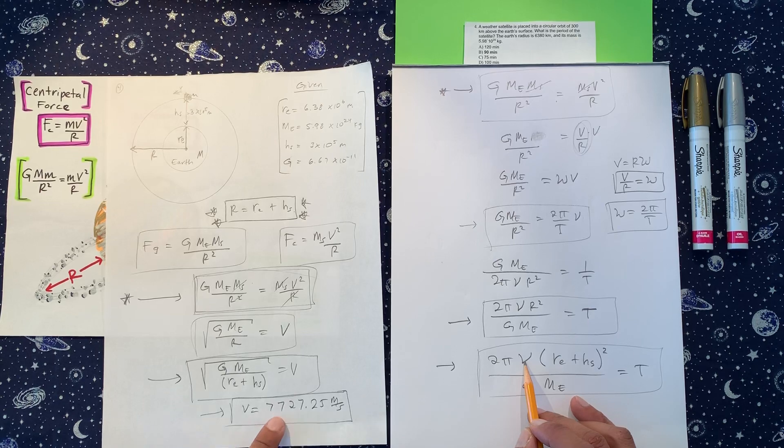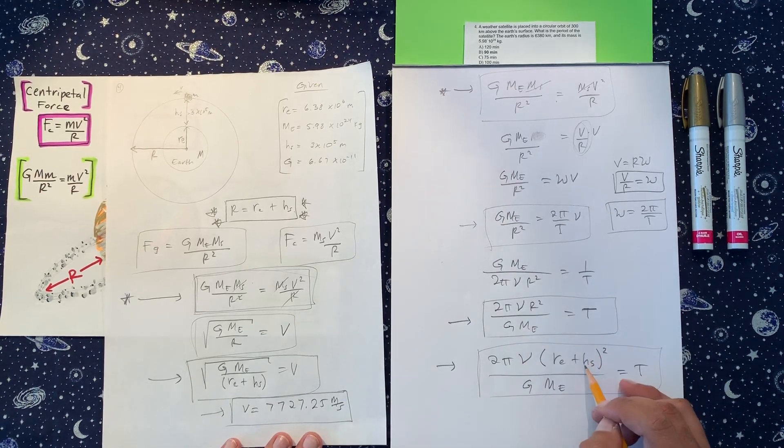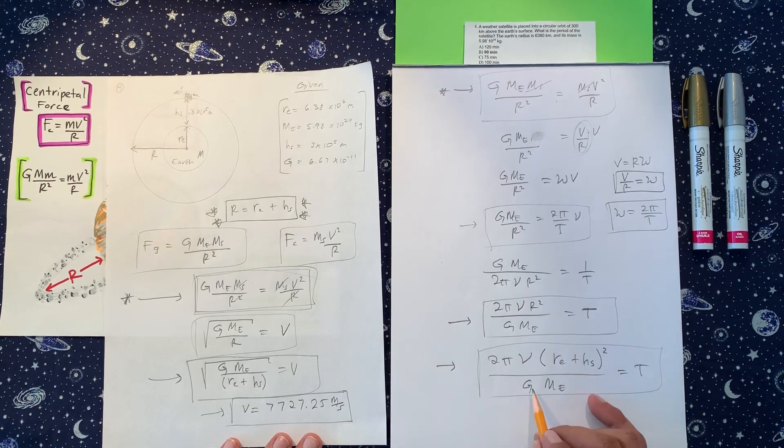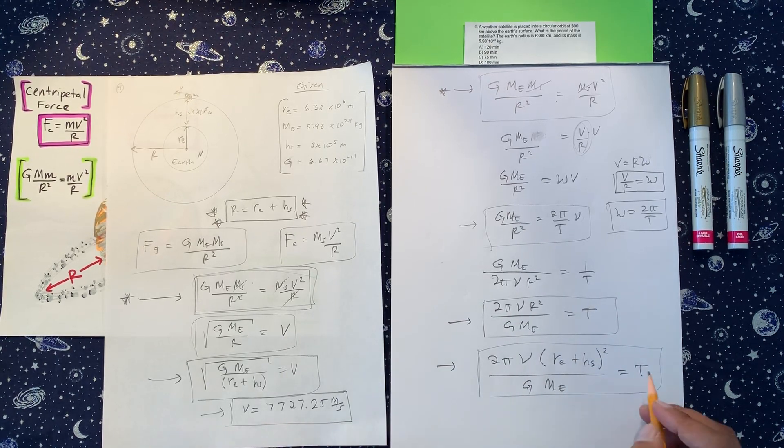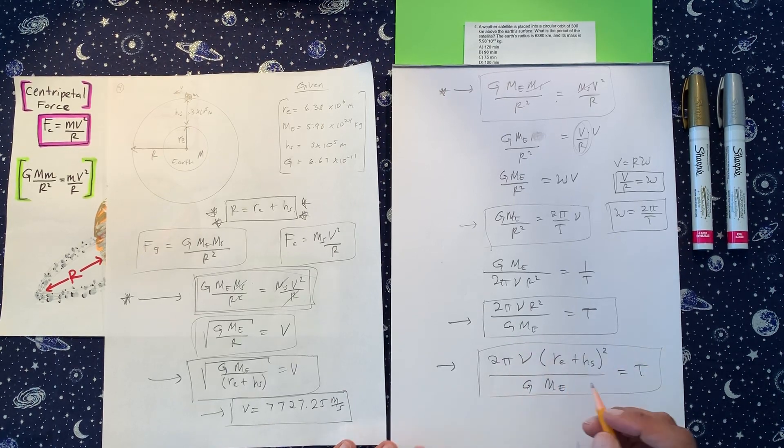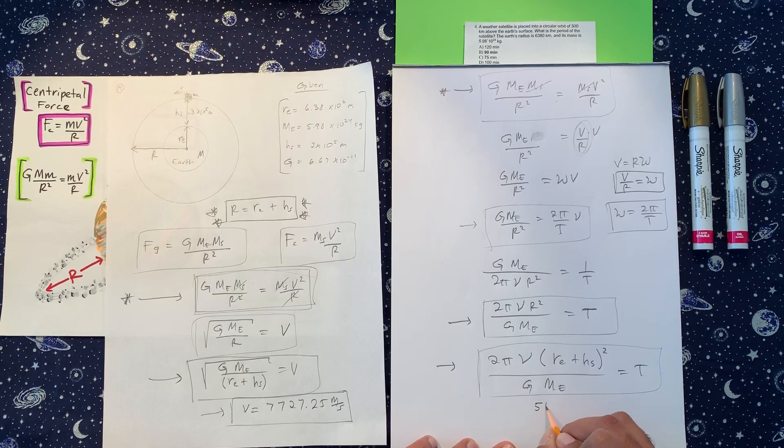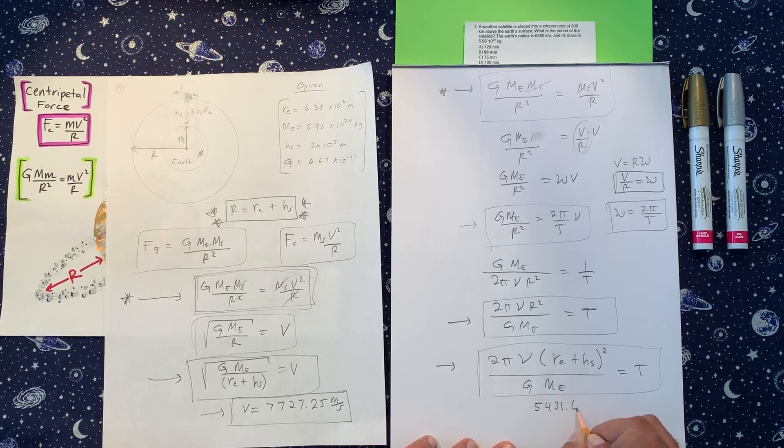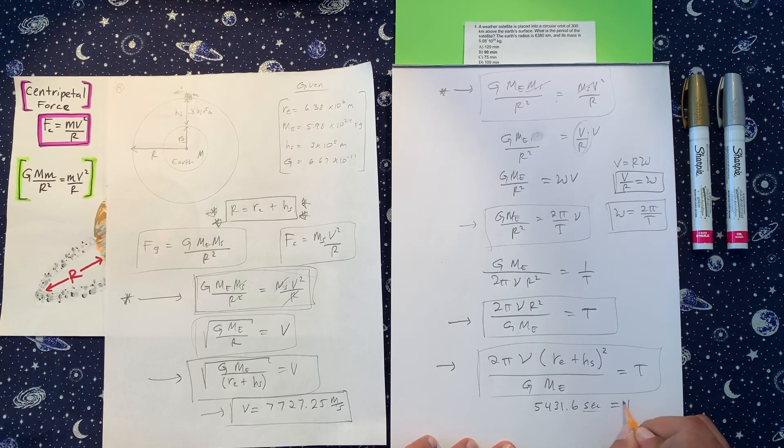That was the part where they try to get you at the end too. Okay. So velocity we calculated here. We know two pi. We got the radius of the earth given, the height of the satellite's given, square that. This constant is given and the mass of the earth is given. So you're going to get, putting all that into the calculator, 5,431.6 seconds, because that's the unit that's measured in period.